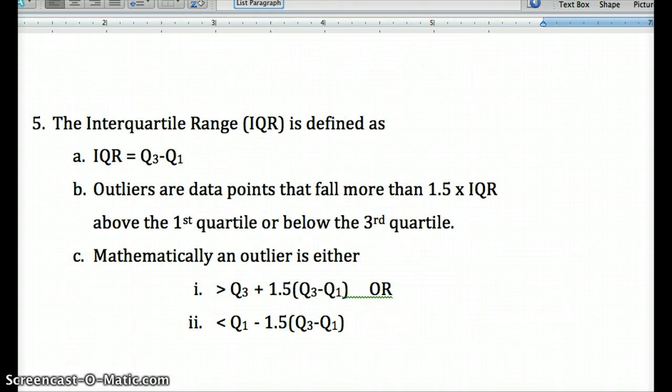So our interquartile range would be the third quartile, meaning the median of the large half of the data set, minus our first quartile, the median of the small half of the data set.